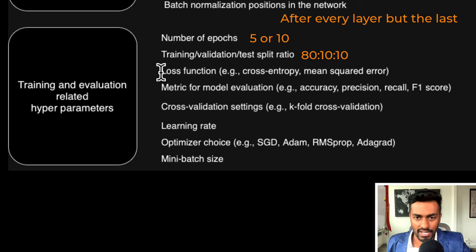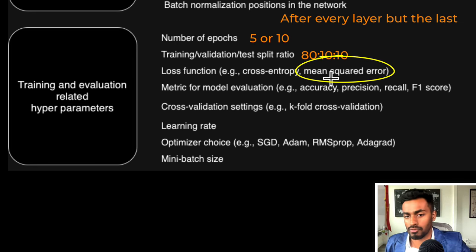The loss function here, well in this case we are doing a regression problem to predict the price of a house, so a mean squared error would be appropriate. But if you have a classification problem maybe a cross entropy loss would be more appropriate.